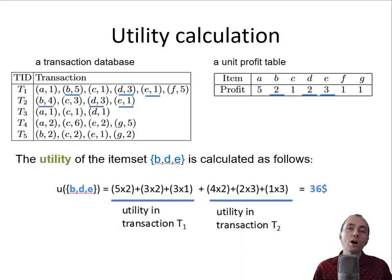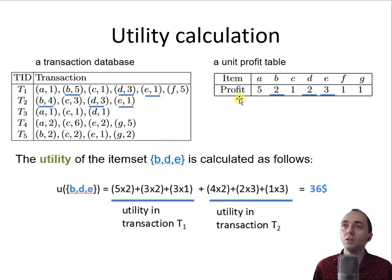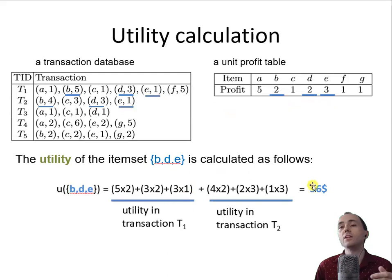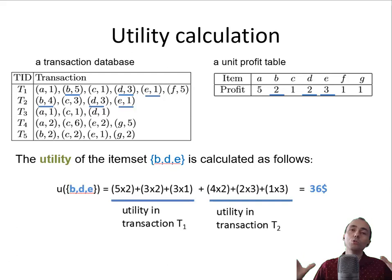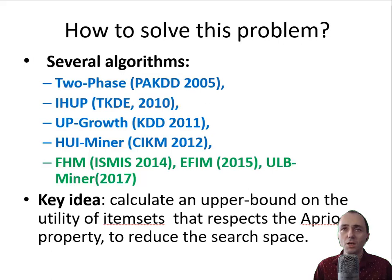To calculate the utility, it is quite simple. For BDE: 5 breads at $2 profit each gives 5×2; 3 units of item D at $2 each gives 3×2; 1 egg at $3 gives 3×1. Summing these gives the total money. But the challenging part is designing efficient algorithms to quickly find all sets of items that make the most money. There are several algorithms for this problem.